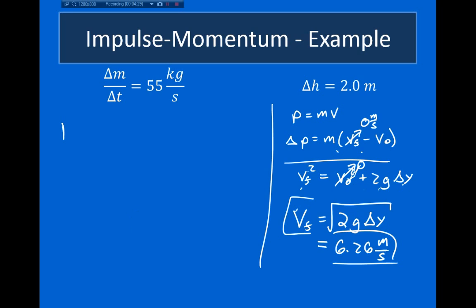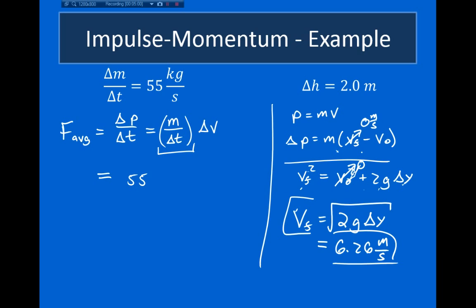Going back to the impulse-momentum theorem, the average force equals the rate that momentum changes with respect to time. The rate the momentum changes equals the rate that mass is falling into the truck times the change in velocity of the sand when it hits the truck. The rate of mass is 55 kilograms per second, and the change in velocity is 6.26 meters per second. Plugging this in, the force that the sand exerts on the truck is equal to 344 Newtons.